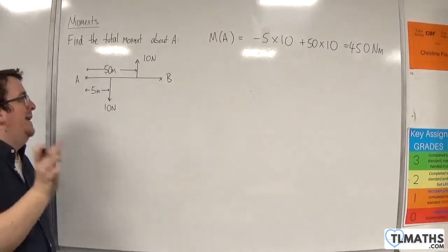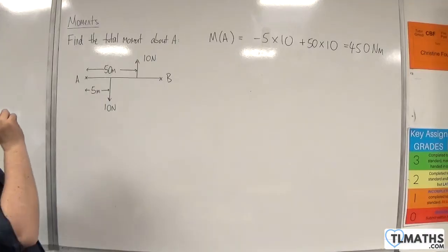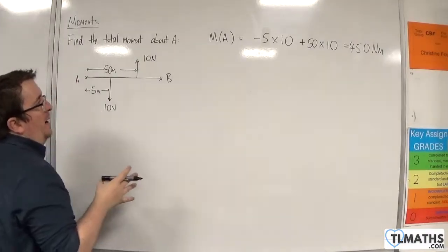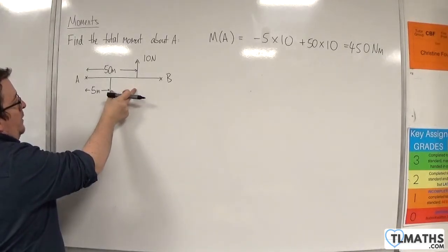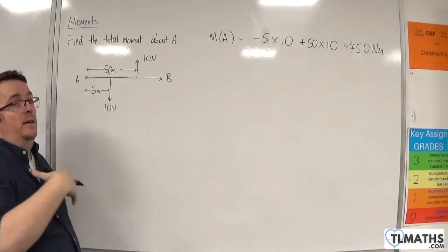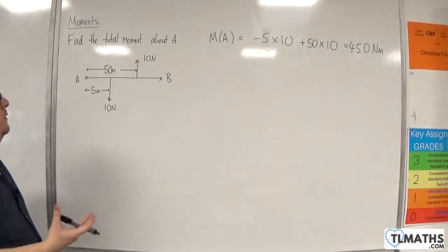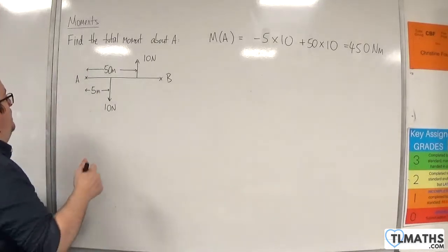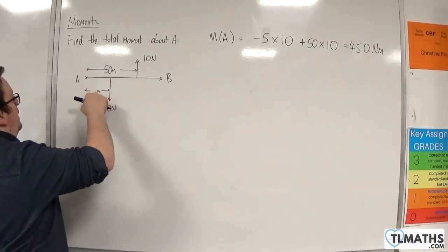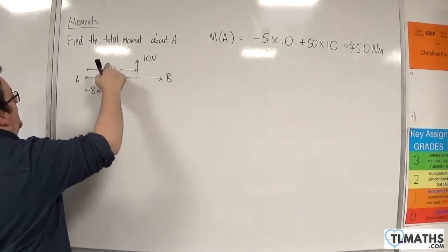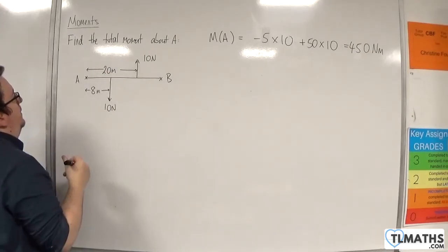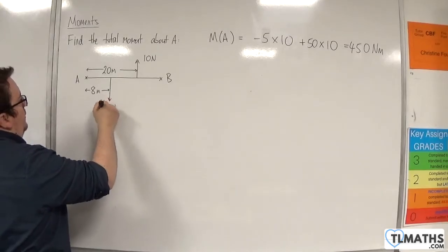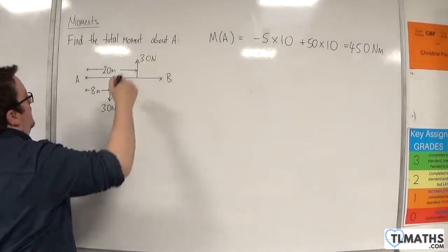Now, what you might now begin to see is, actually, we can work out the total moment about point A by finding this distance. So that, in this case, would be 45 metres, and then multiplying that by 10. So let's put that to the test. Let's change this to 8 metres, and let's change this to 20 metres, and let's change this to 30 and 30.